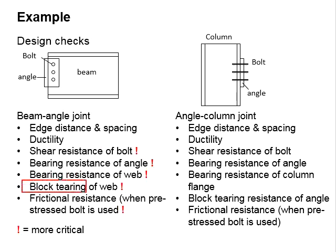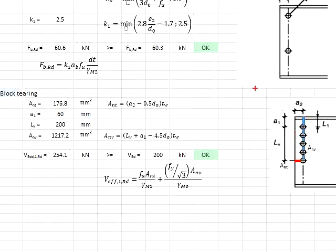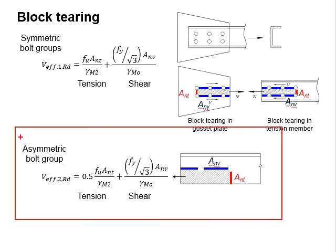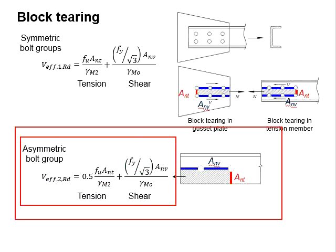Our next step now is to check for the block tearing of the web. Referring to the diagram here, this is the possible mechanisms of the failure of the block tearing. You will expect this to be the shear plane while this is to be the tensile plane.